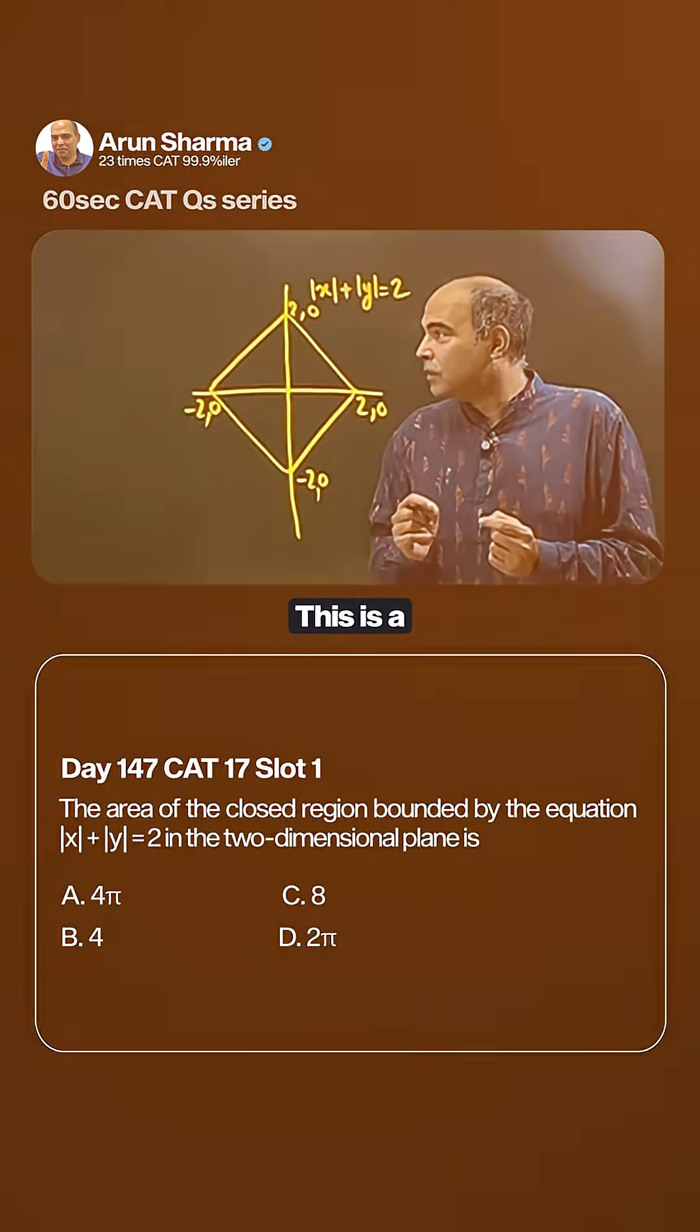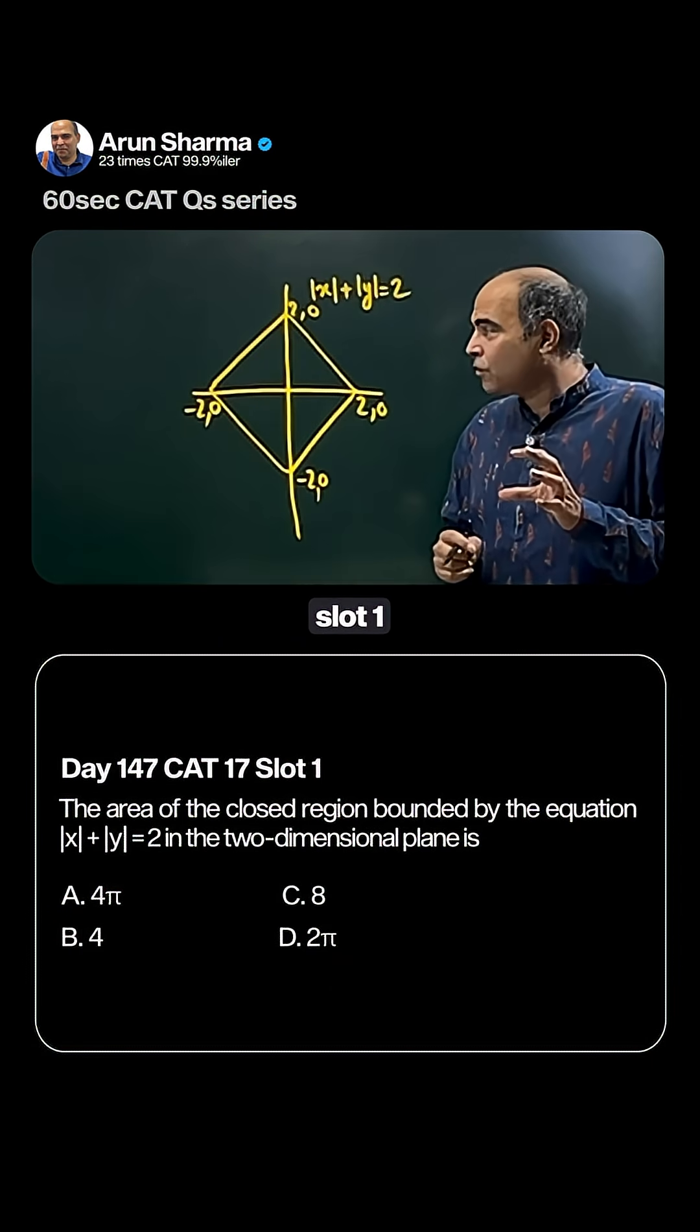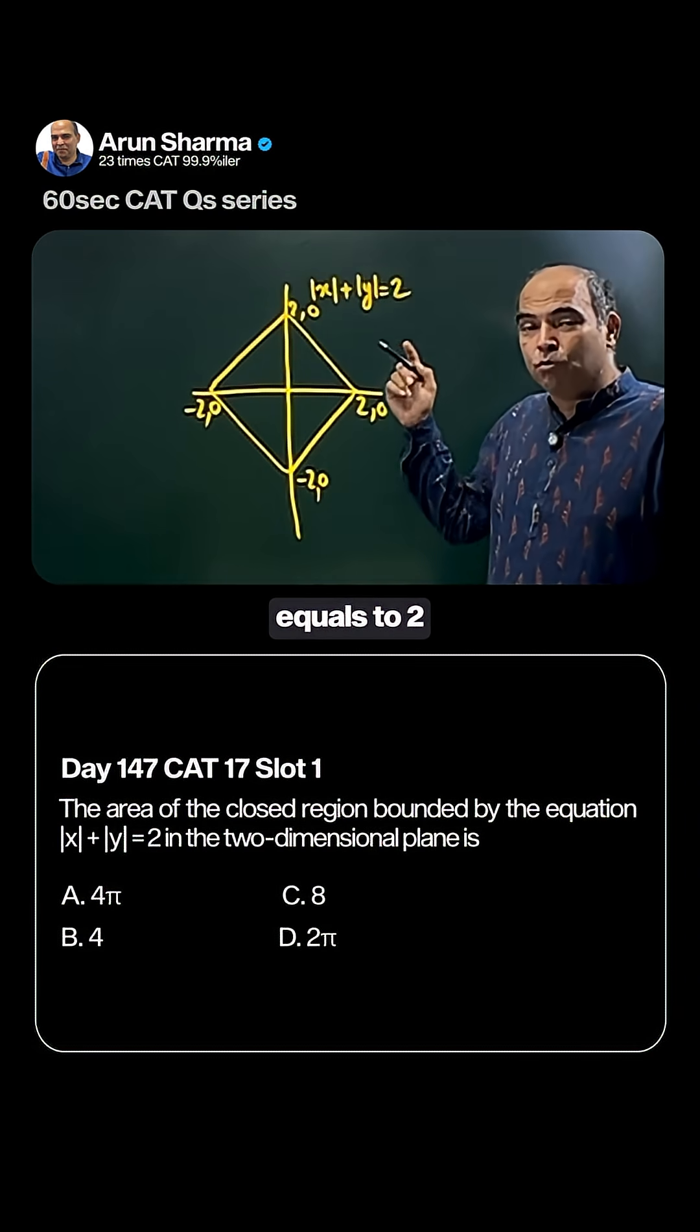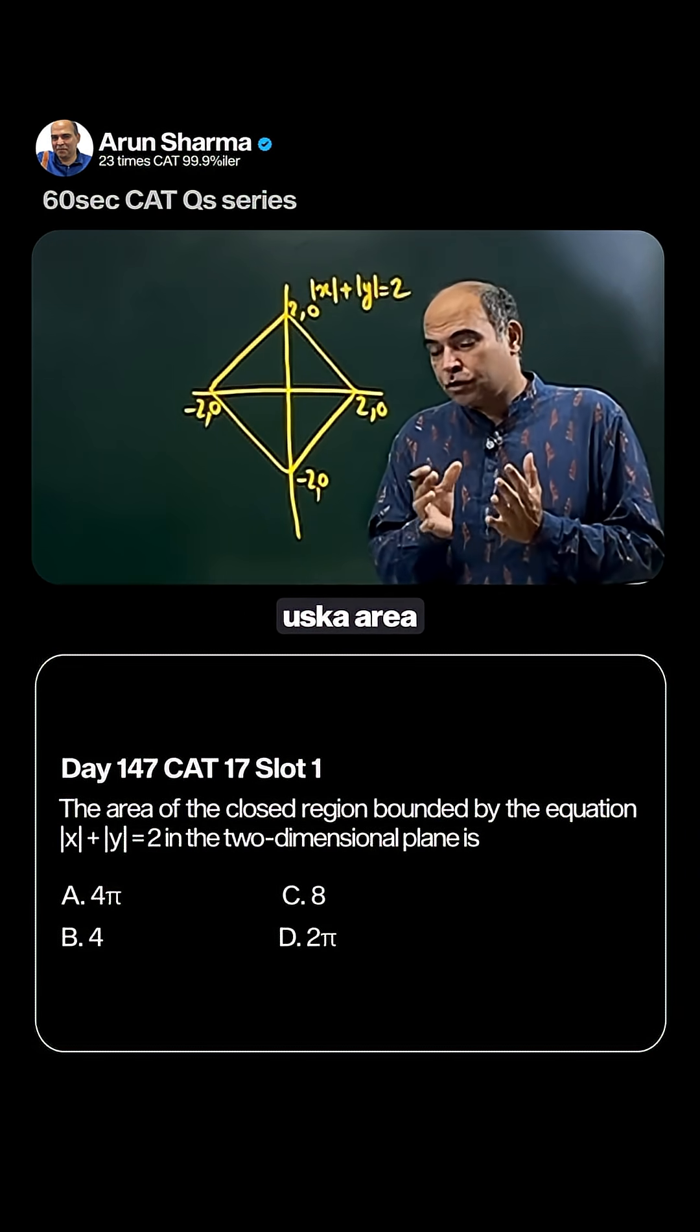Let's solve a CAT question in under 60 seconds. This is a question from CAT 17 Slot 1. In this question, you're given that |x| + |y| = 2. The closed area on the x-y coordinate axis will be how much?